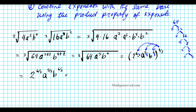That gives us 2 to the 6 thirds, a to the 5 thirds, b to the 6 thirds. When we simplify: 6 thirds simplifies to 2, so 2 squared. For a, 5 thirds doesn't simplify, so we write it as a mixed number: 3 goes into 5 once with remainder 2, giving us a to the 1 and 2 thirds. And b to the 6 thirds is b to the second power.